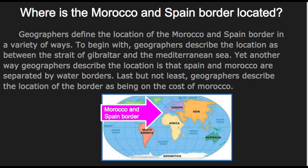Geographers define the location of the Morocco and Spain border in a variety of ways. To begin with, geographers describe the location as between the Strait of Gibraltar and the Mediterranean Sea. Yet another way geographers describe the location is that Spain and Morocco are separated by water borders. Last but not least, geographers describe the location of the border as being on the coast of Morocco.